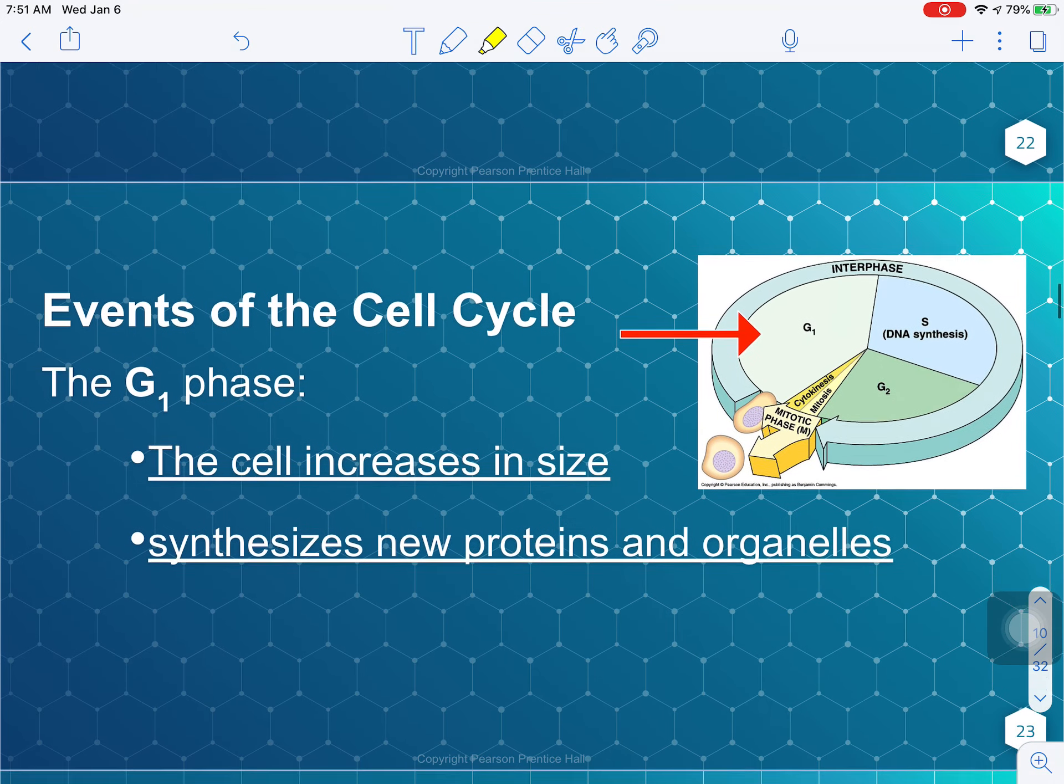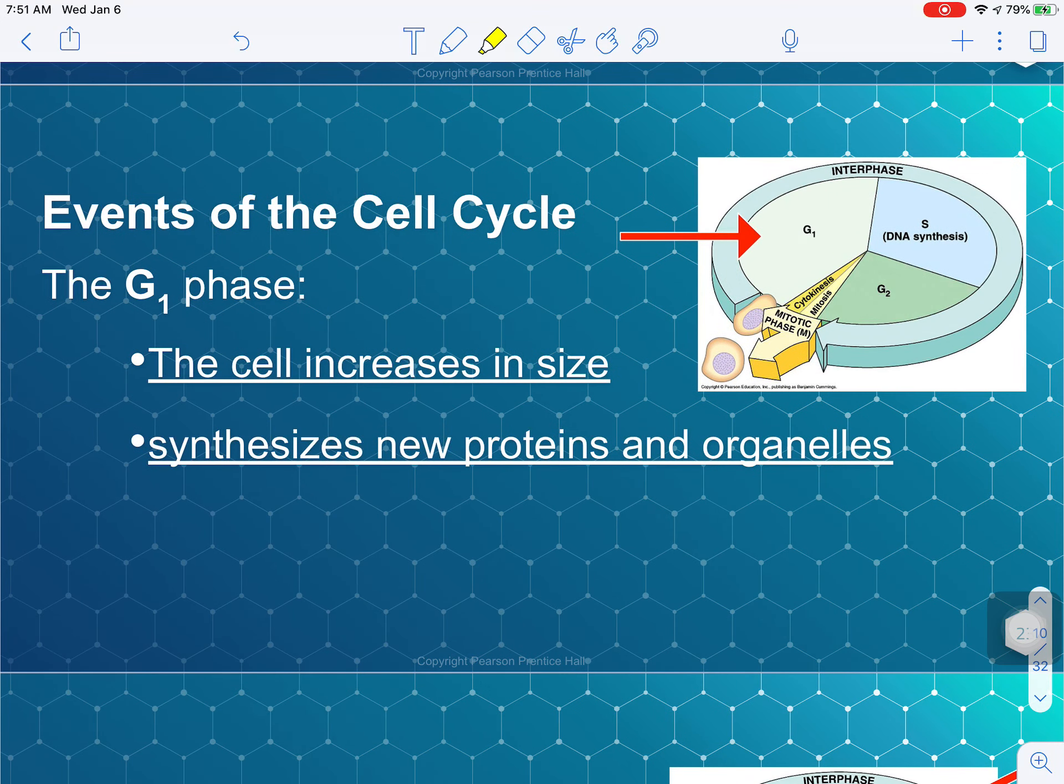So we're just going to look at the interphase steps today. So during G1, the very first phase of the cell cycle, the cell has two jobs. It needs to increase in size and synthesize, which means to make new proteins and new organelles. So this is a brand new cell that has just divided, is starting its life in G1, and it needs to grow up. It needs to start making the proteins that it was designed to make, start making the organelles or the cell structures that it is designed to make in order to carry out its function. So two really important things for the life of a cell happen during G1.